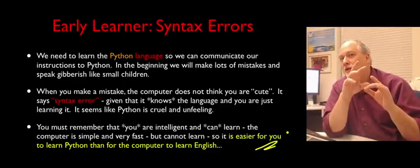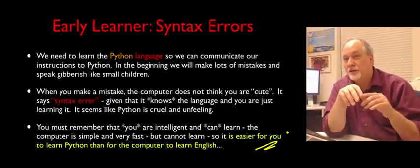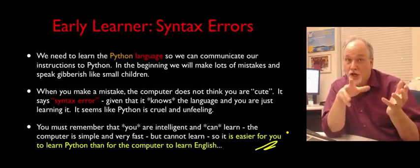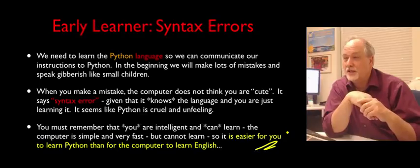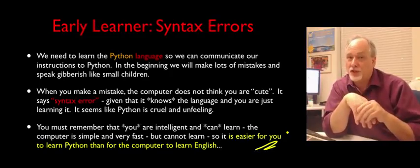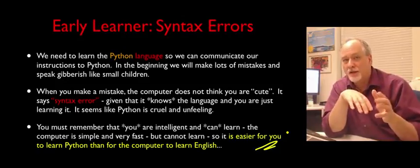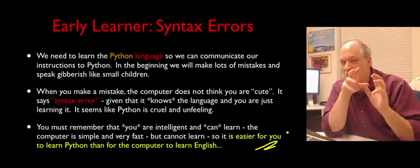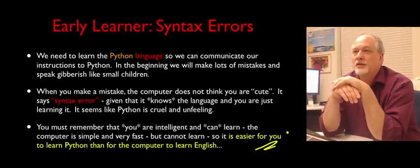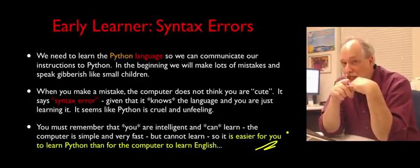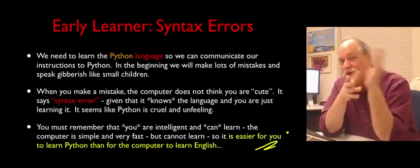So instead of thinking of Python as some kind of evil demonic monster that just hates you and just keeps saying syntax error, think of Python more like a dog. What can you talk to a dog? Can you say 'lovely sunset we're having' to a dog? Because the dog's not going to understand that. The dog does understand some things like food, bath, walk. But it doesn't understand the accumulated works of Shakespeare. So when you talk to a dog, you got to be careful to talk the subset of the vocabulary that the dog knows. And so this is a key thing when you're first learning. There's only a certain set of things that Python understands.